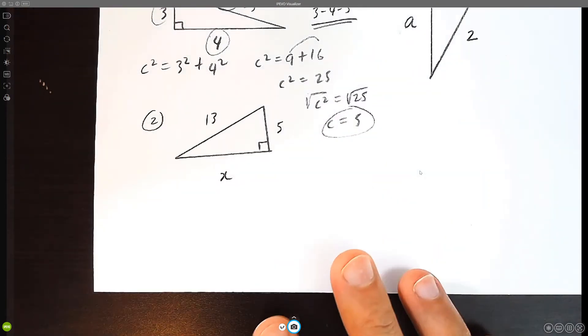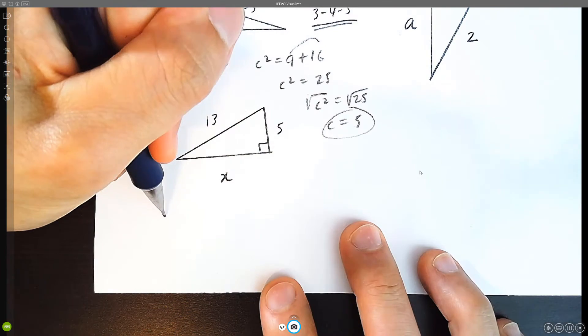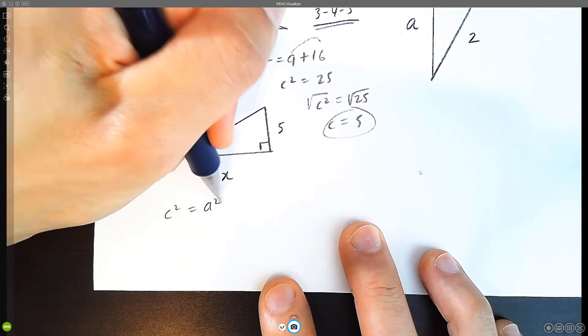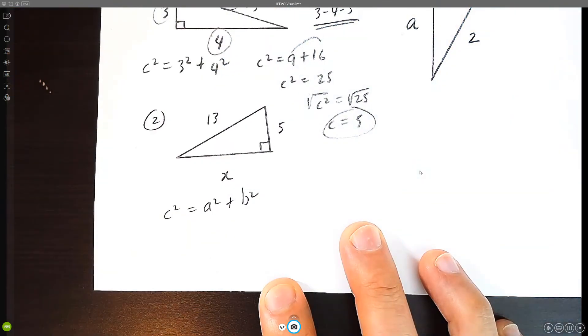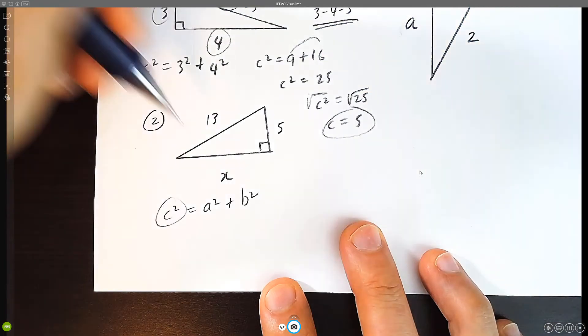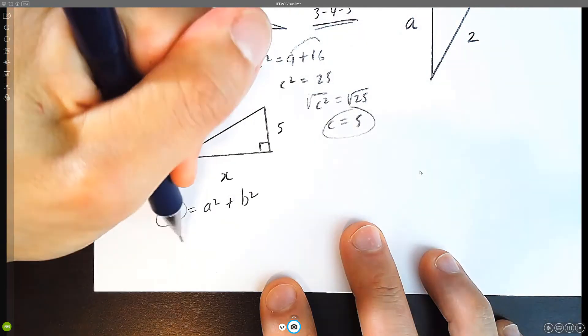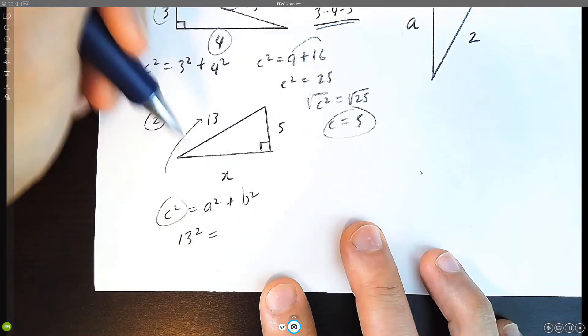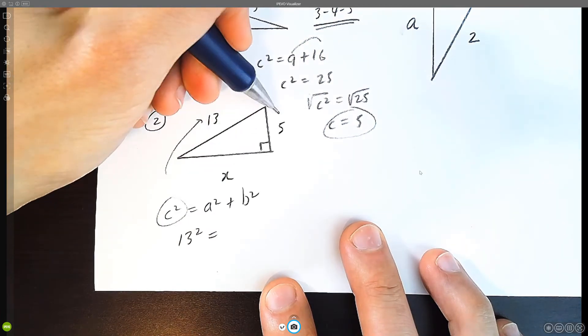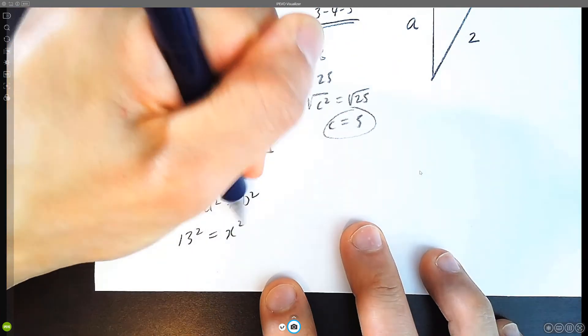Now let's work on example two. We have c squared equals a squared plus b squared. And your hypotenuse, the longest side, happens to be thirteen. So thirteen squared equals one side squared plus the other side squared. It doesn't really matter which order.